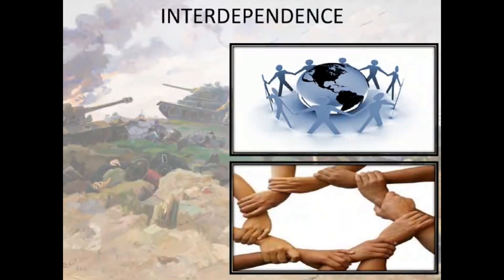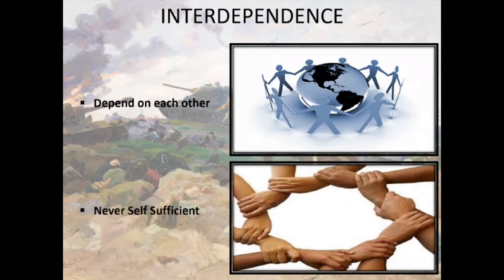Interdependence: All the countries of the world depend on each other irrespective of their size and status. This is called interdependence. Any nation can never be self-sufficient about its needs. Even prosperous and developed nations have to depend on other big or small nations. Interdependence is an integral part of today's international system, that is, today's global system.